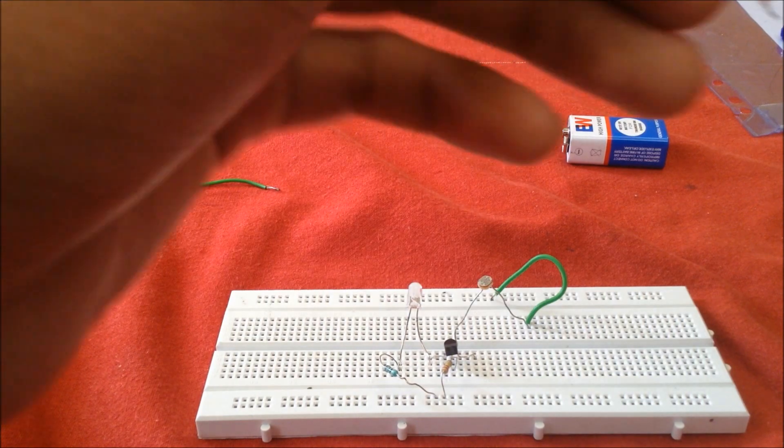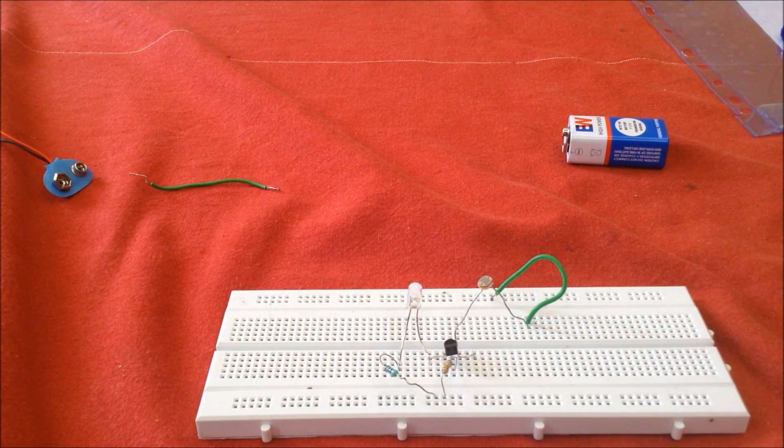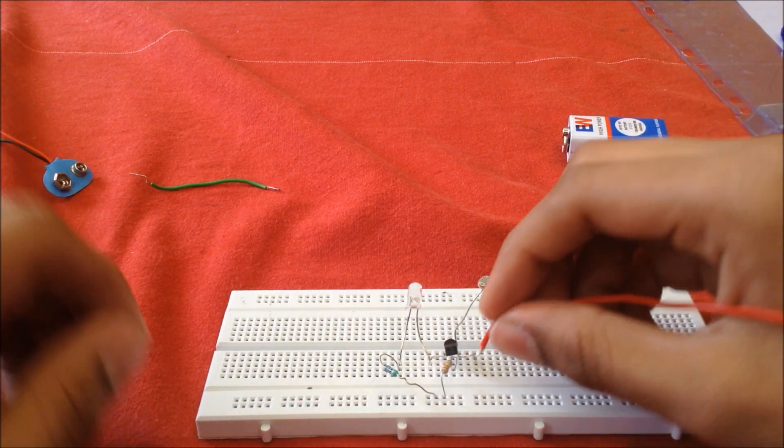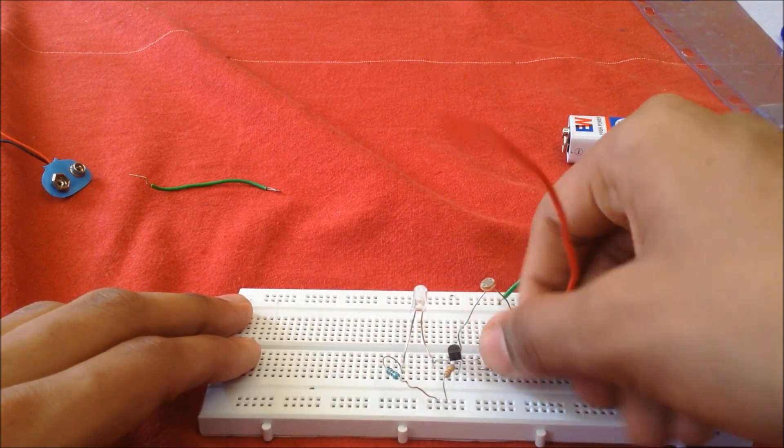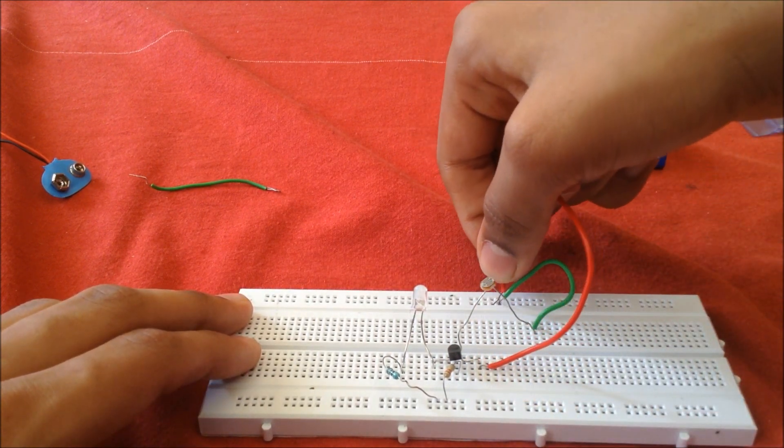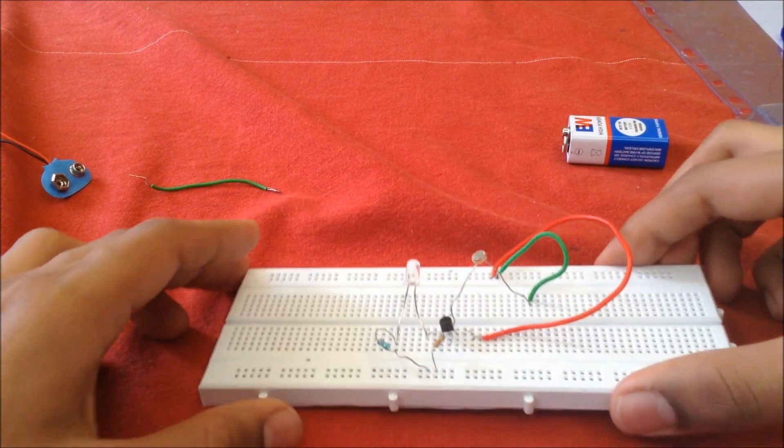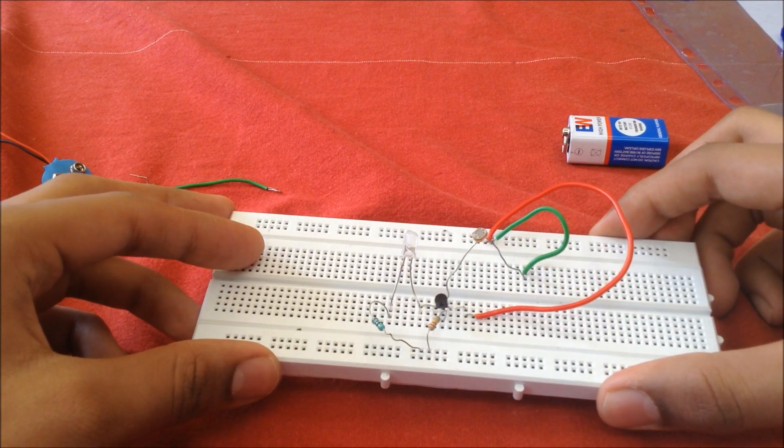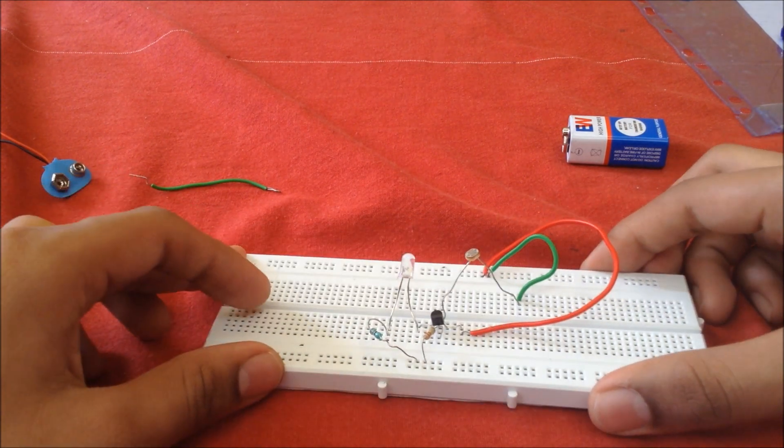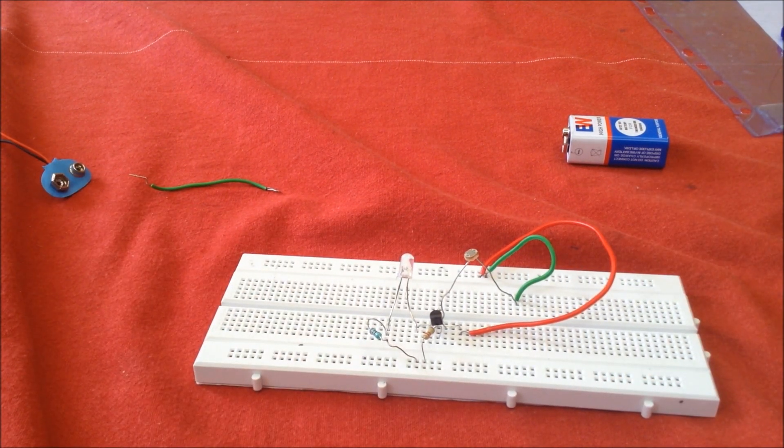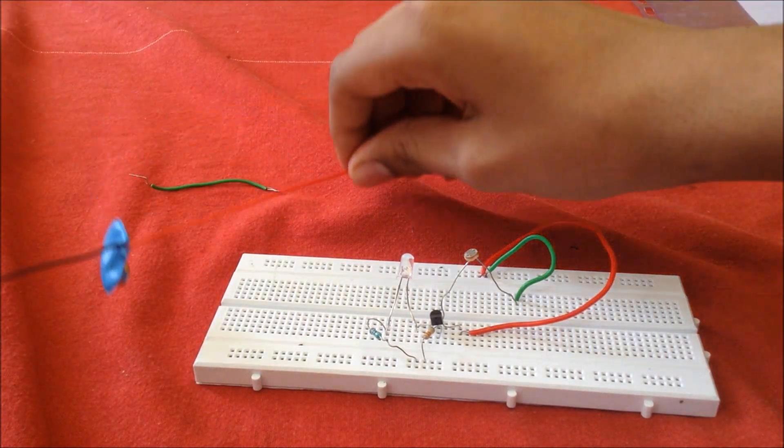Then we move on to the terminal of the transistor to the terminal of the battery. So now that's the circuit, and now we attach the battery.